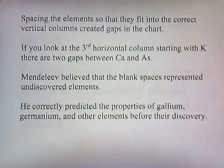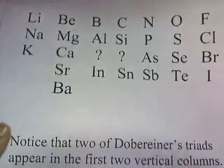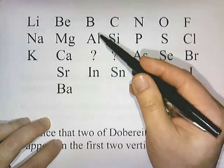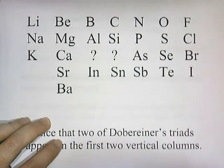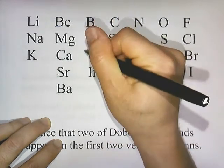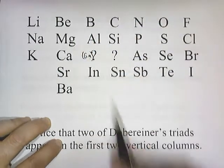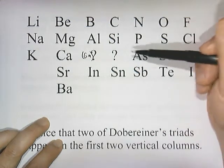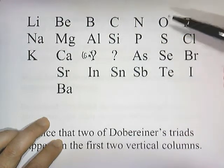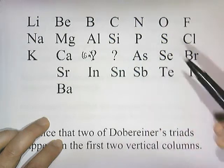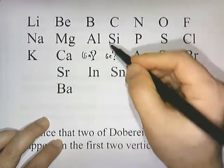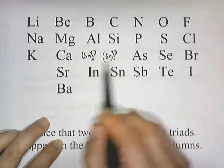Mendeleev believed the blank spaces represented undiscovered elements. He correctly predicted the properties of gallium, germanium, and other elements before their discovery. For example, he predicted that gallium would have properties matching aluminum, boron, and indium, and estimated its atomic mass. Likewise, he predicted that germanium would fit between two known elements, have an atomic mass averaging those two neighbors, and might be a semiconductor. Before these elements were discovered, he could predict their properties from the gaps.